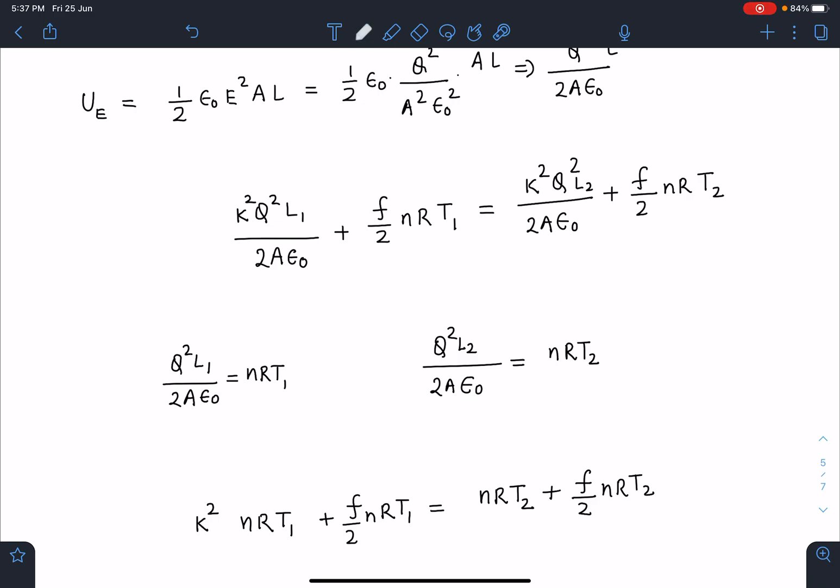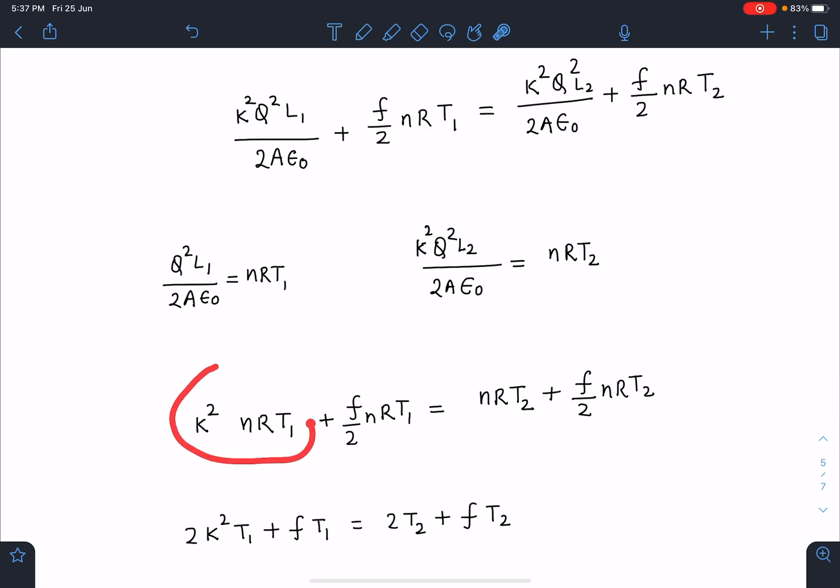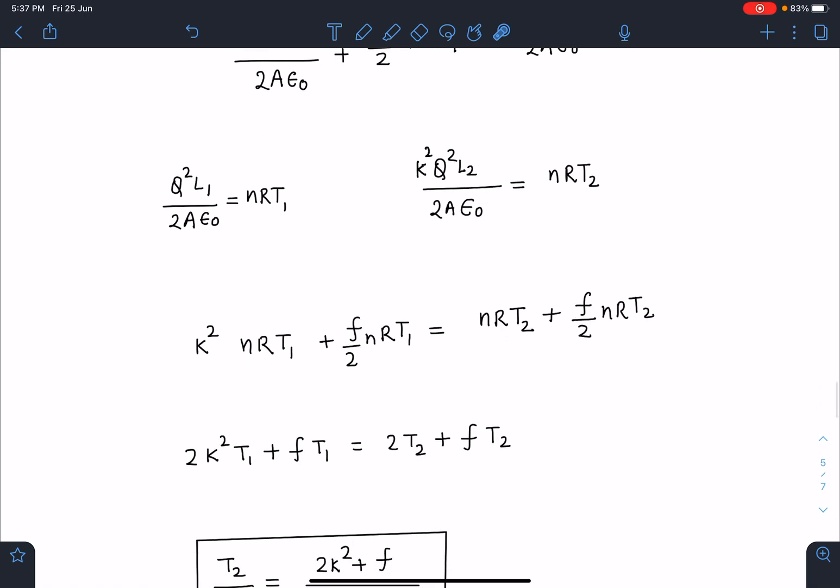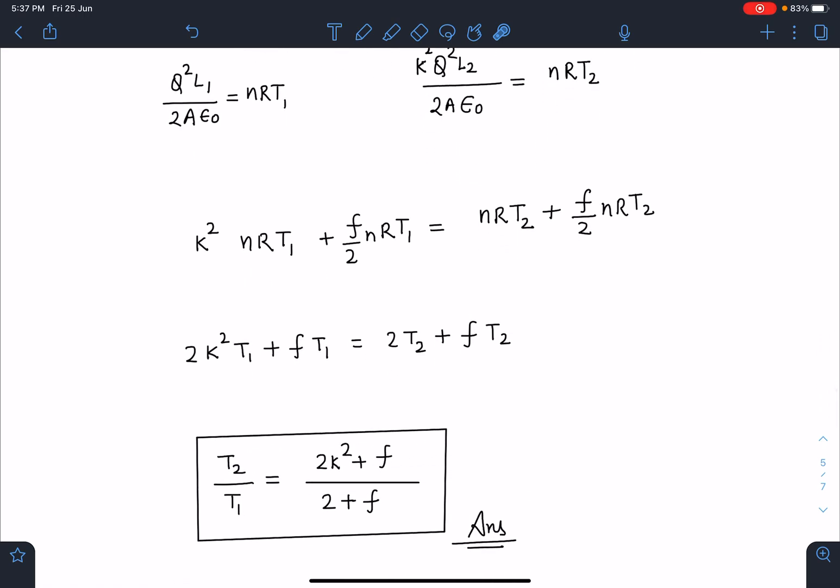So when you substitute the values you can just see here this will become k squared NRT1, k squared NRT1 and this is f by 2 NRT1 and this will become NRT2 and internal energy of the gas is f by 2 NRT2. When I simplify this I'm going to get this T2 by T1 as 2k squared plus f divided by 2 plus f, this is going to be the final answer for this problem for temperature ratio.